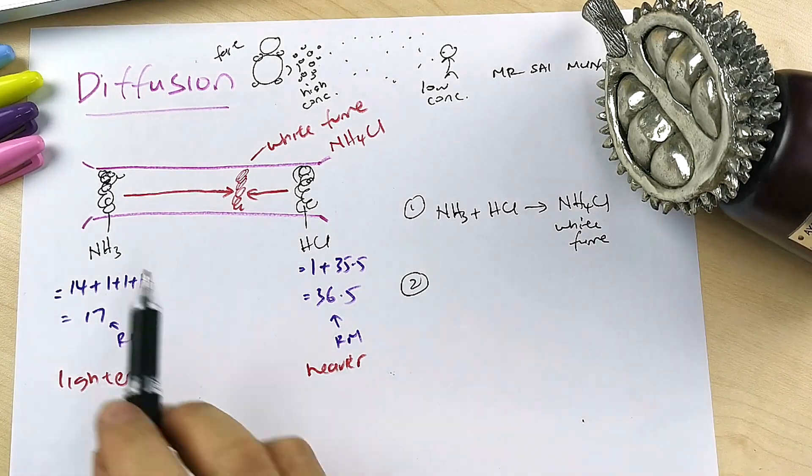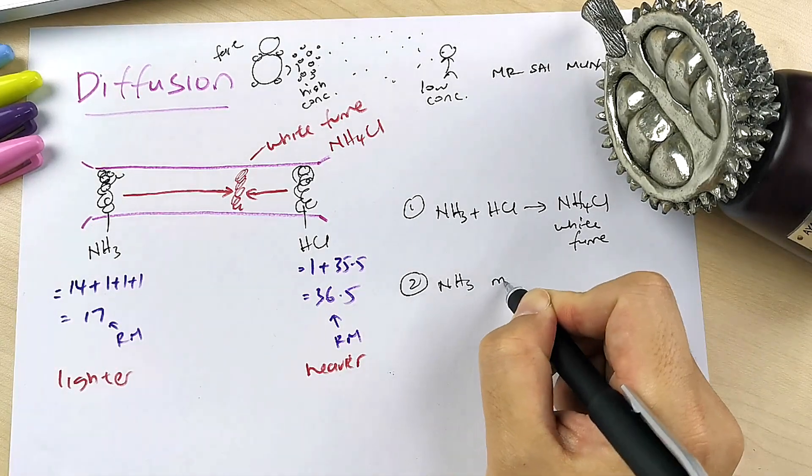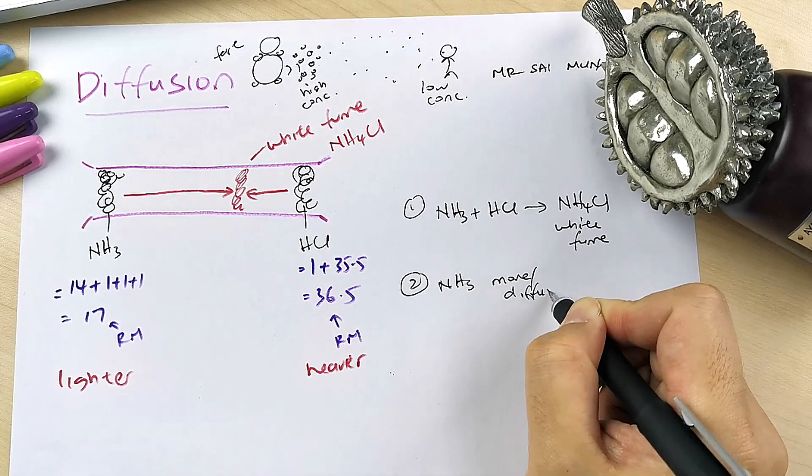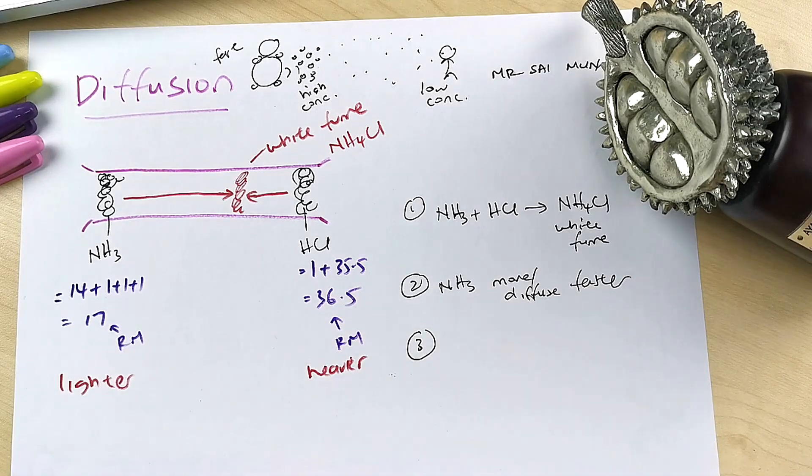Now then, two: if that's so, which one moves faster? You'll be NH3 diffuse or move faster.